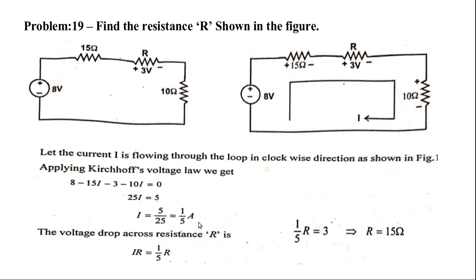From the KVL equation, solve for I: I = 1/5 ampere. To find R, apply Ohm's law: V = IR. The voltage across R is 3 volts, so 3 = (1/5) × R, giving R = 3 × 5 = 15 ohms.